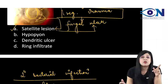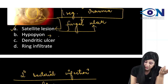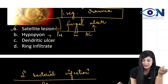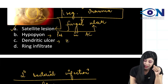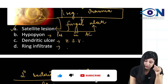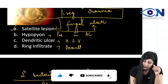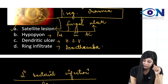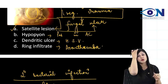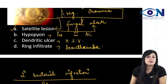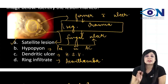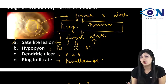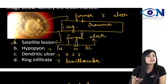Identify the lesion. Let us see the other options also. Hypopyon — what is the meaning of hypopyon? Pus in the anterior chamber. We have dendritic ulcer, which is found in herpes simplex virus. Ring infiltrate is found in acanthamoeba. So you are sure this is not acanthamoeba, this is not a dendritic ulcer, and you cannot see any pus in the anterior chamber. By diagnosis of exclusion — eliminating the wrong options — you get to know that the answer is A.